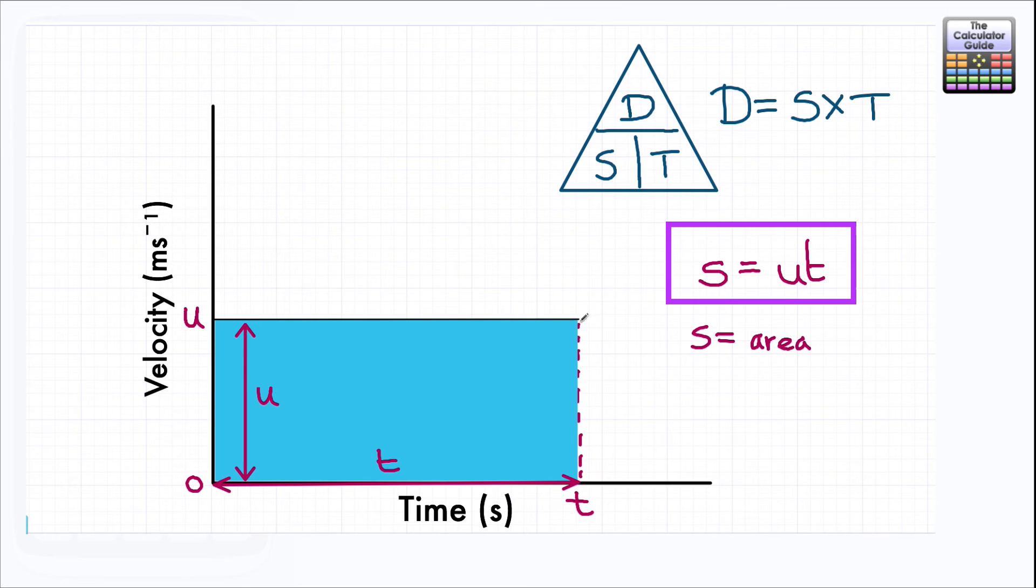So it's telling us that the area of this particular rectangle, the area under the graph that we had, is equal to the displacement. And that's quite a key fact in terms of interpreting velocity time graphs, speed time graphs, so that you know that the area underneath represents the displacement. And we're going to be using that in a series of future videos.